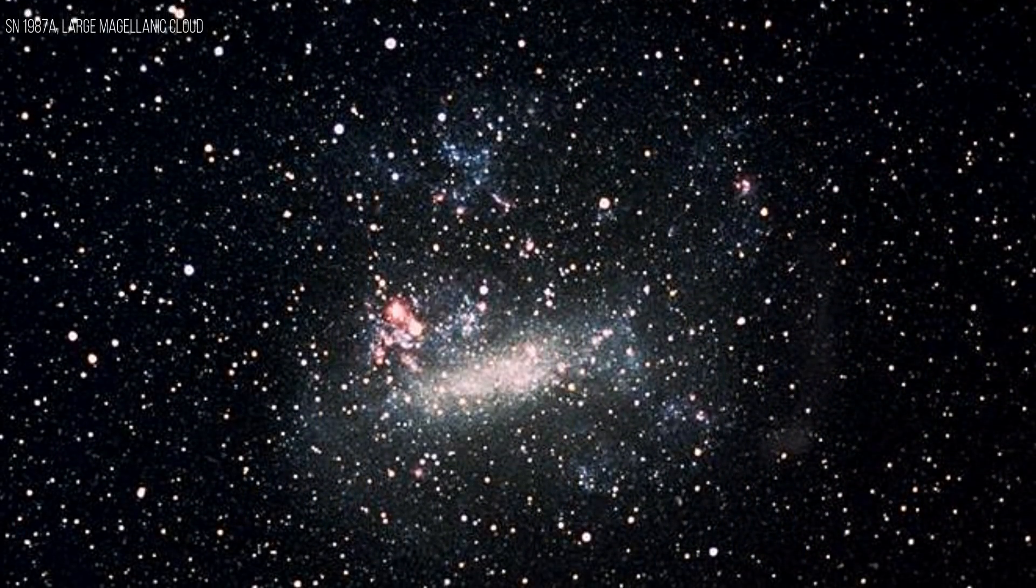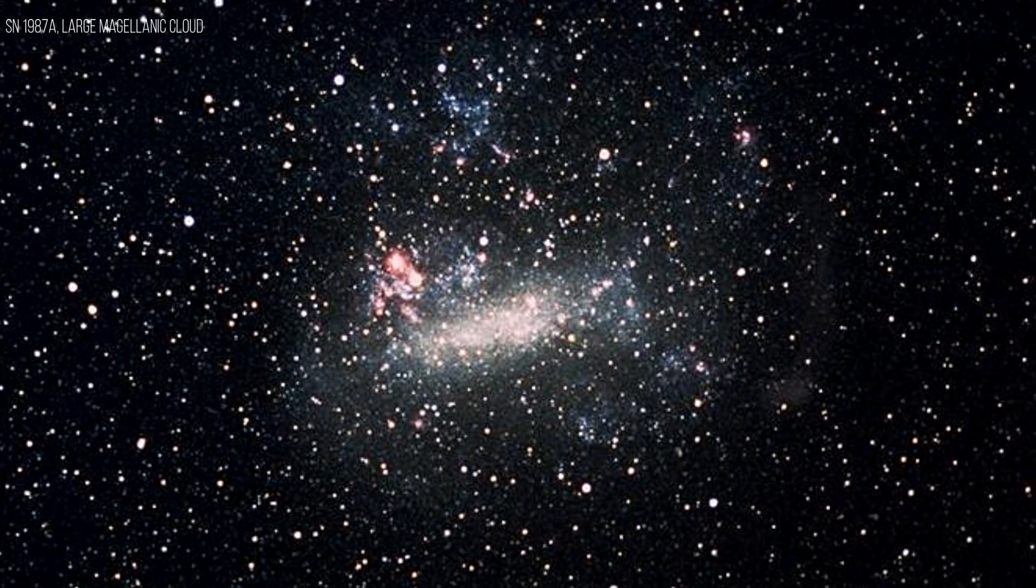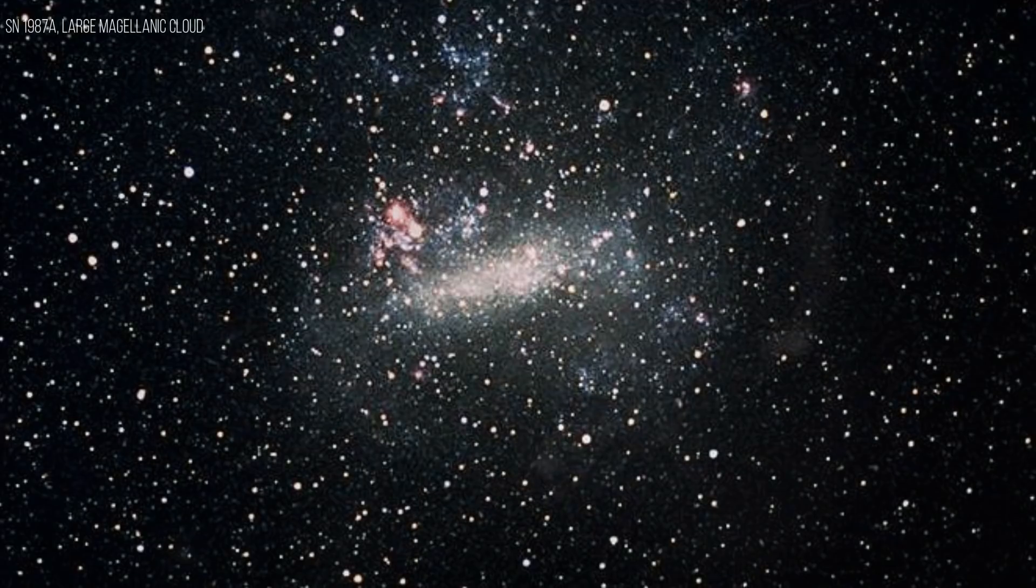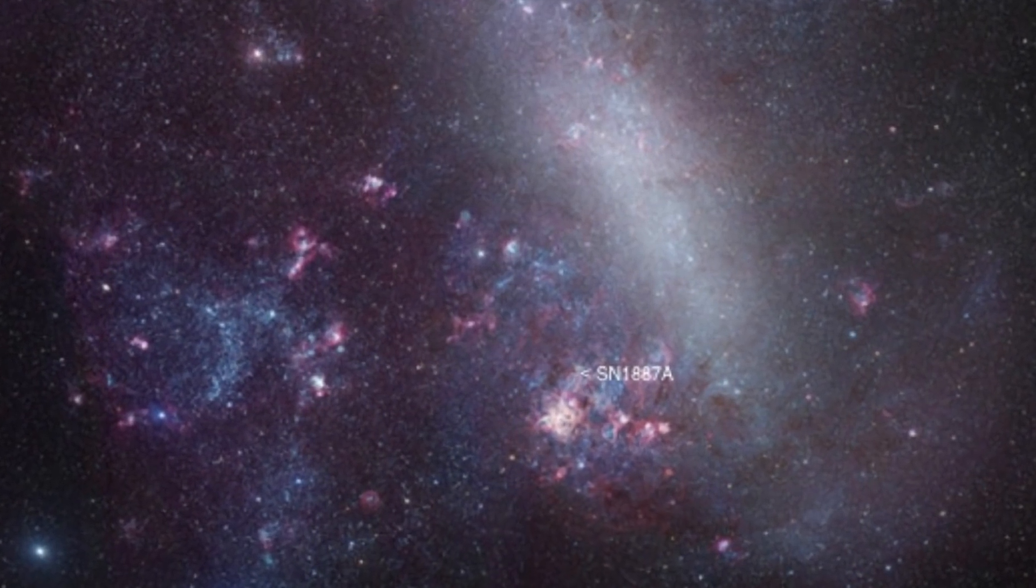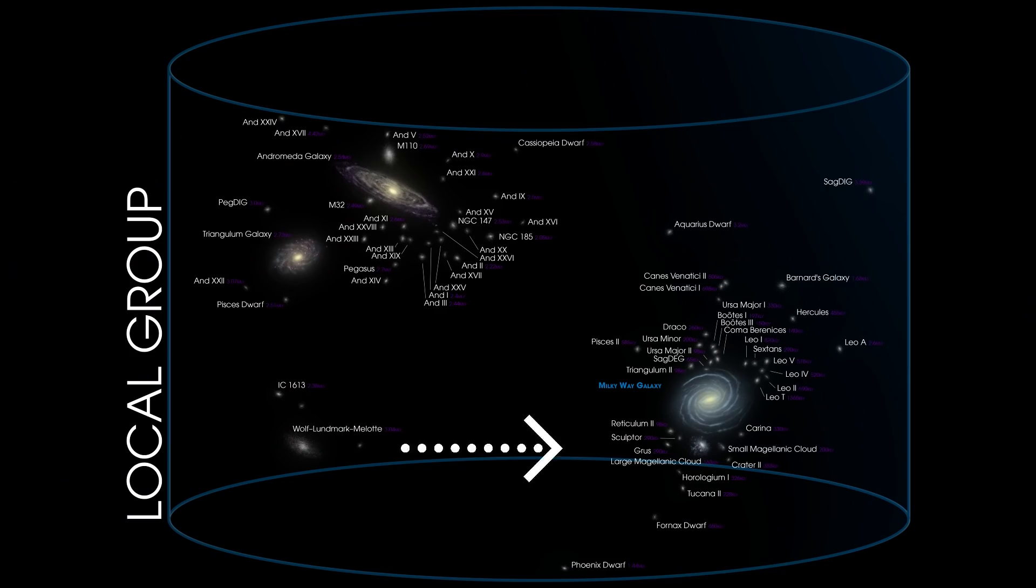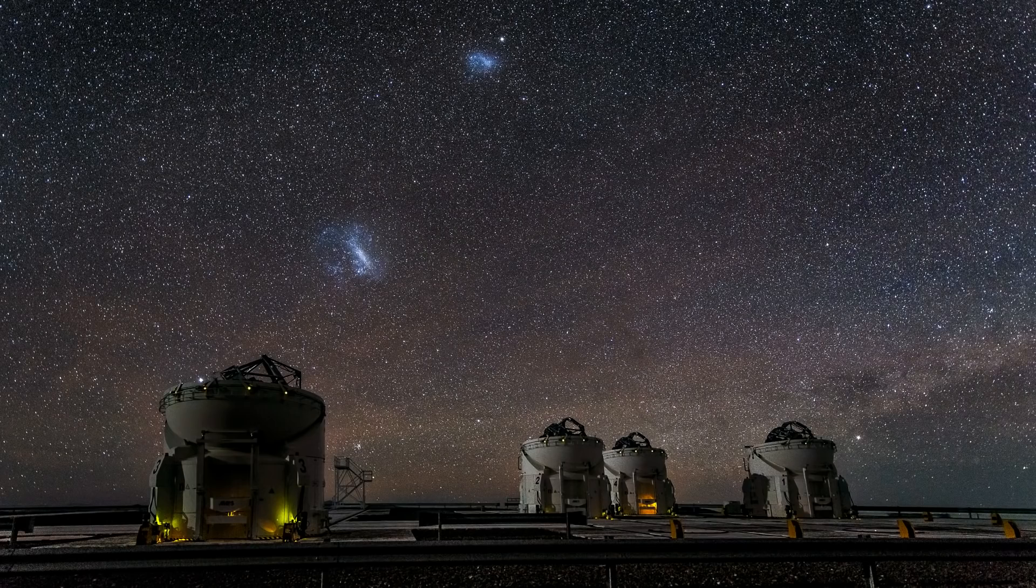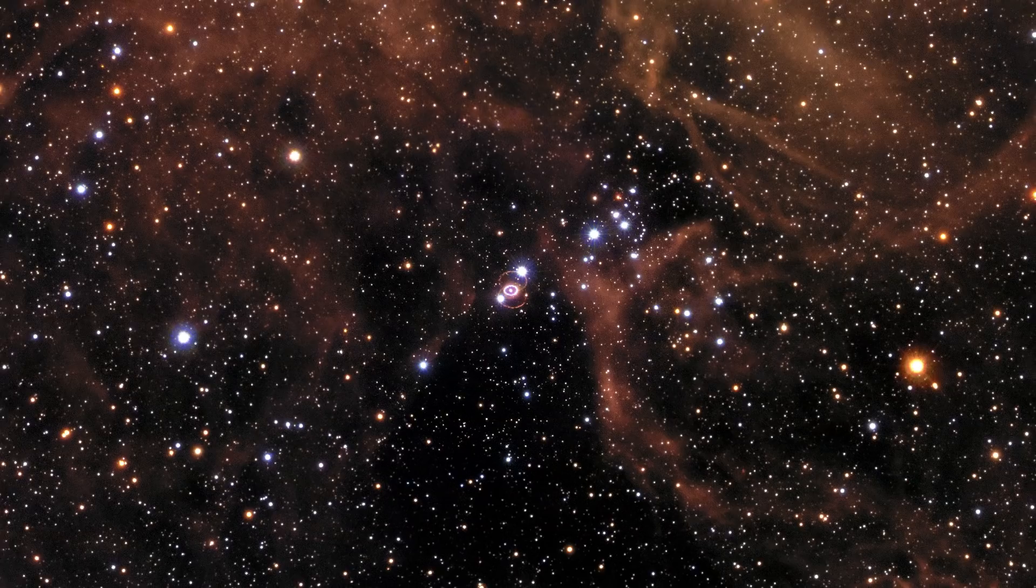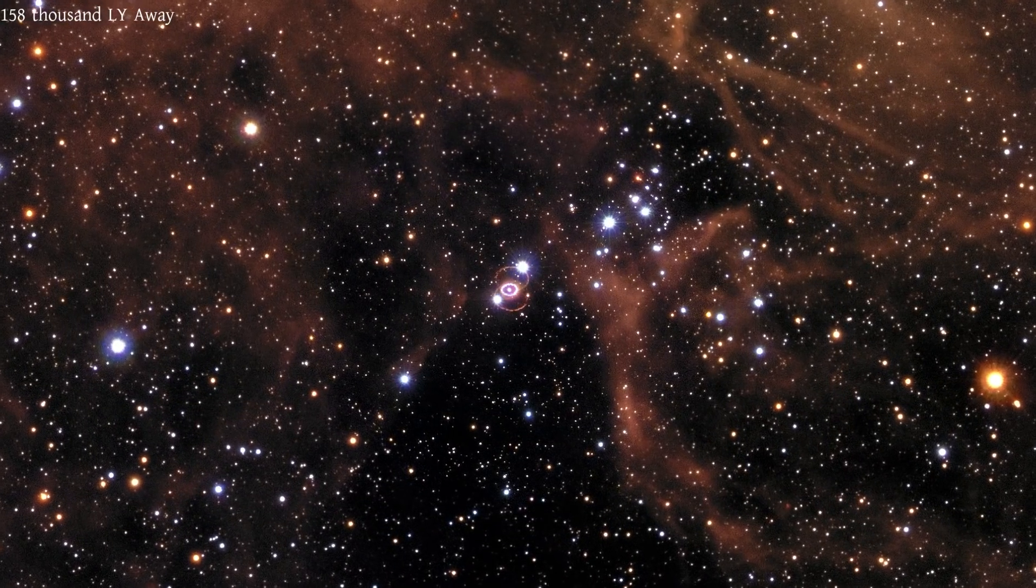In the year 1987, a supernova was observed in the Large Magellanic Cloud, which was the only supernova ever seen in our local group of galaxies. Large Magellanic Cloud is a satellite galaxy of our Milky Way at only 158,000 light years away.